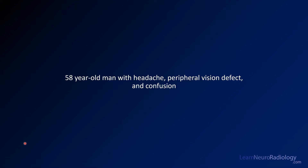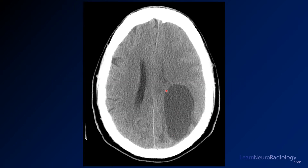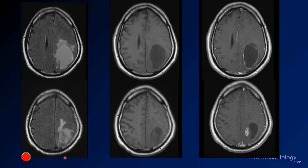Here we have a 58-year-old man with headache, peripheral visual defects, and confusion. CT shows a low-density mass in the left cerebral hemisphere in the parietal-occipital region with deep extension and mass effect on the left lateral ventricle. On MRI, FLAIR images show a pretty homogeneous lesion with a little surrounding edema. Pre-contrast shows a central region that is cystic with more solid components along the side. Post-contrast confirms a thin wall of enhancement with a more nodular area along the medial aspect — a cyst-and-nodule lesion.